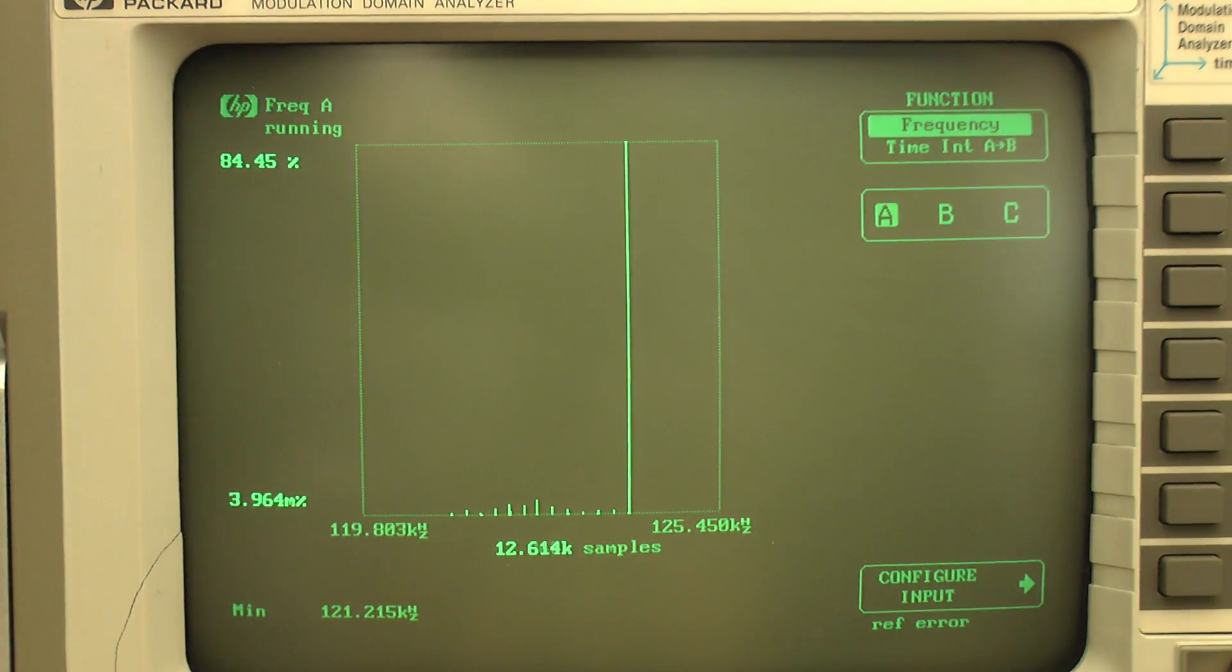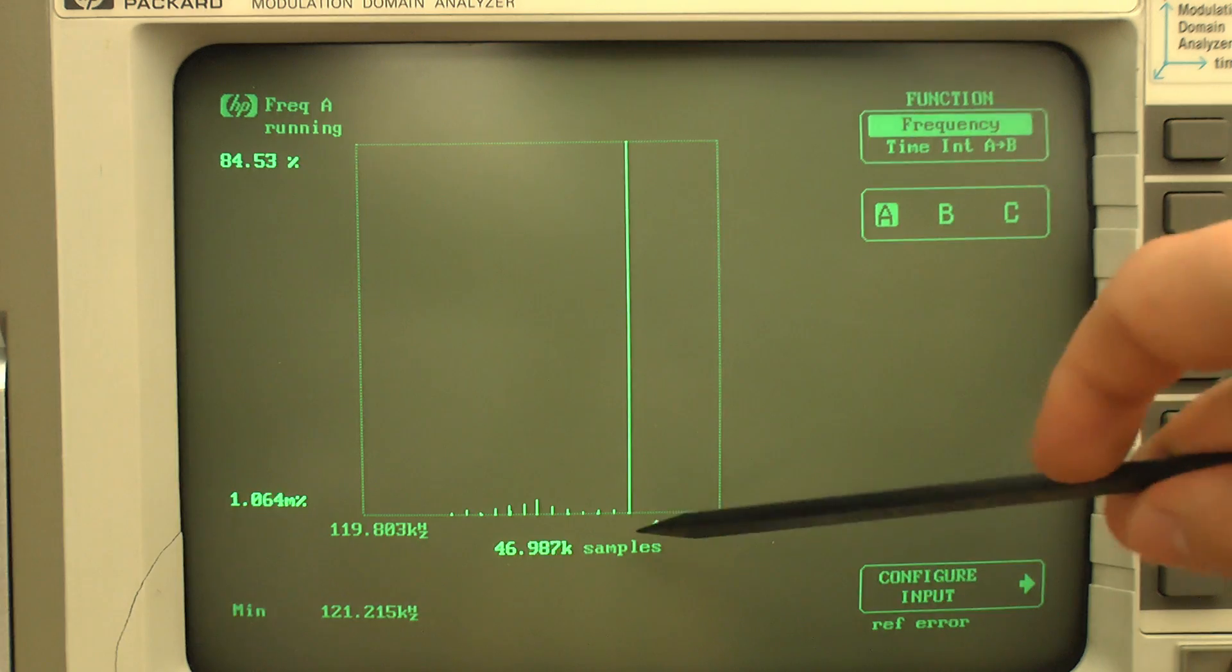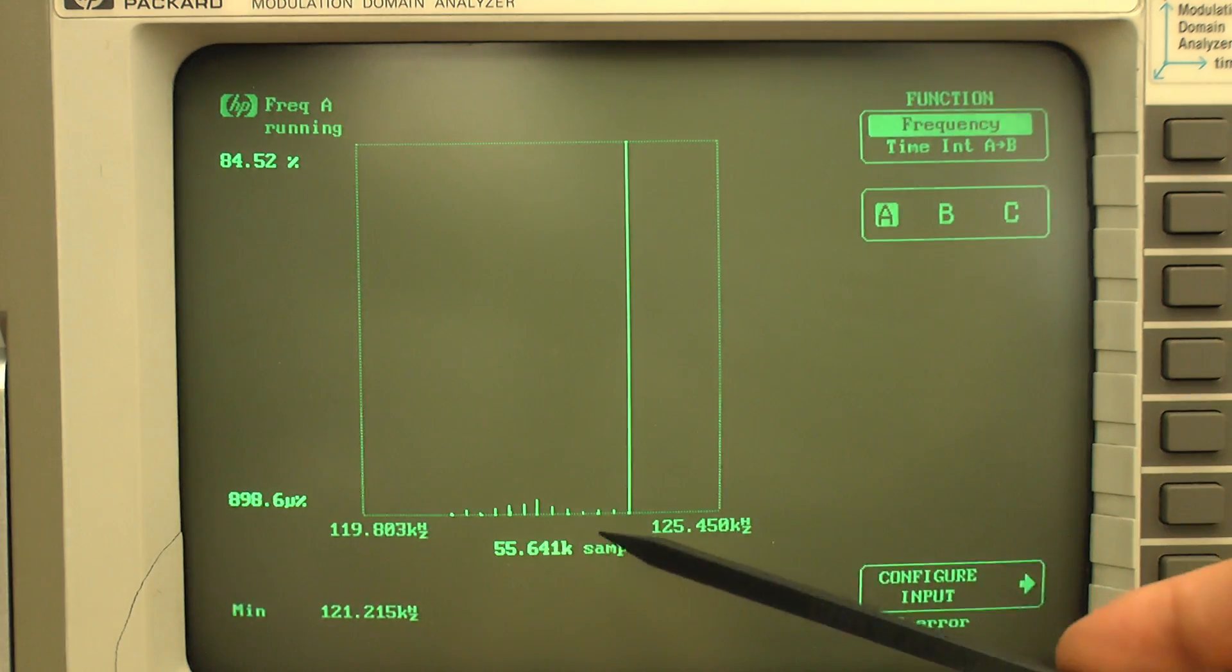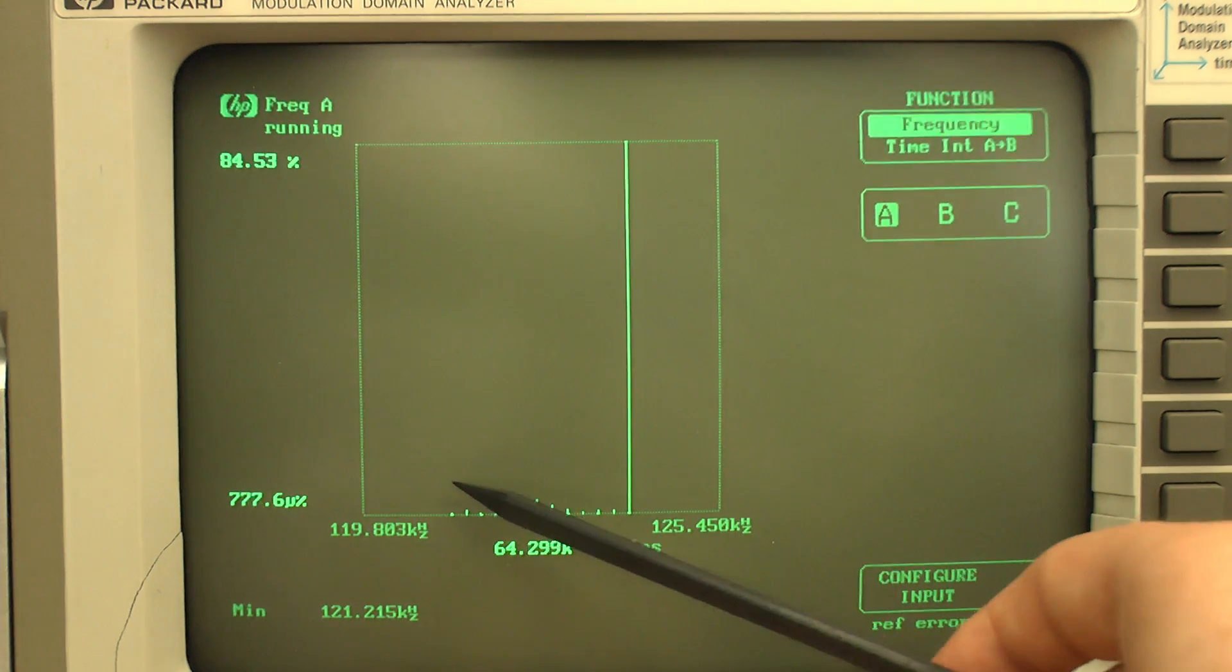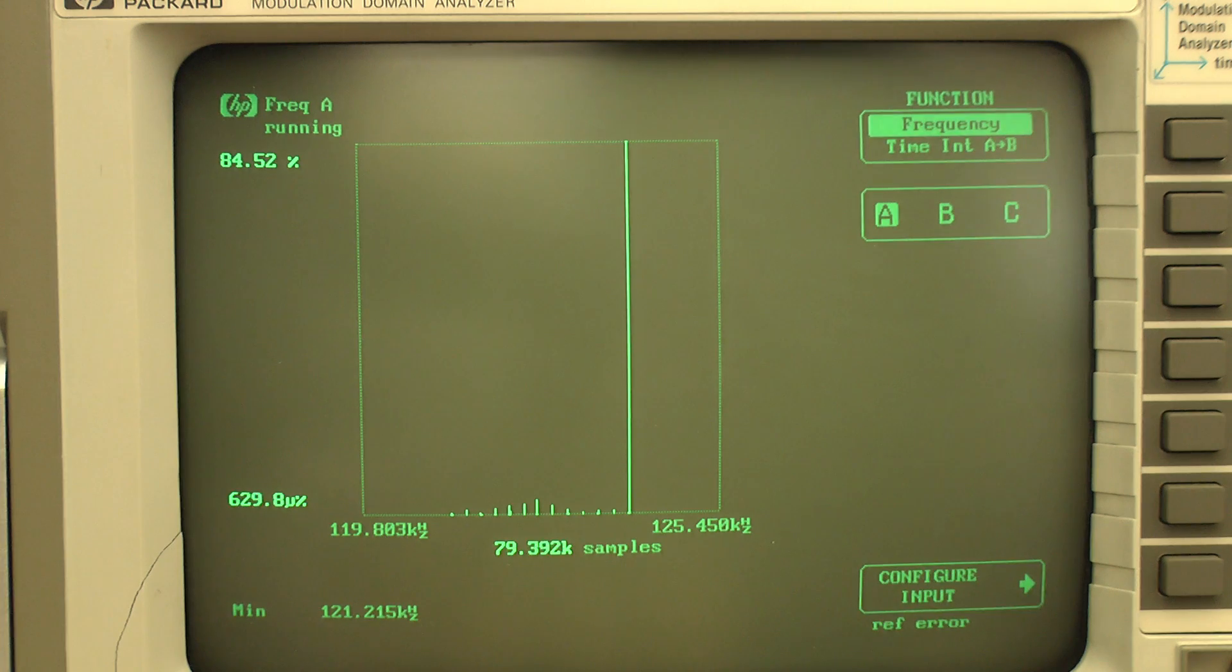So, as we see the modulation domain analyzer has just automatically set itself up and has started to collect some samples. And we see here that the majority of the waveforms generated is here in the area of about 123 kHz. But that there also is a quite significant amount of slower waveforms. Some of which even range down into the 119 kHz range.